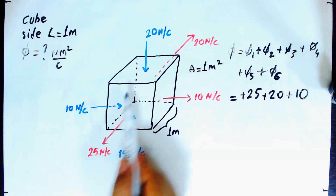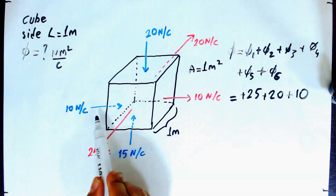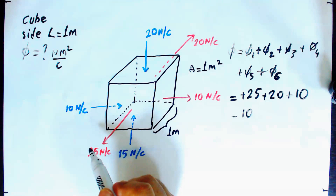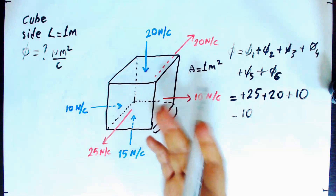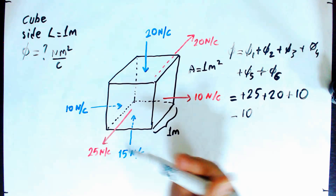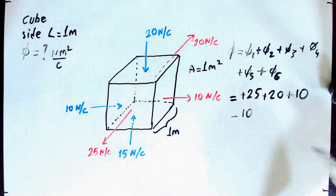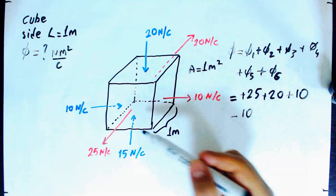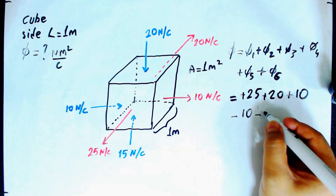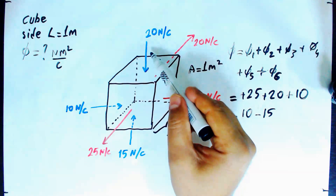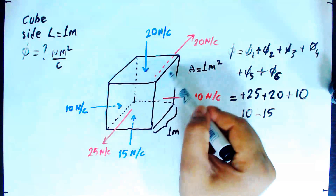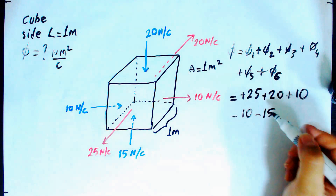For phi4, the electric field through this face is into the volume, so I must take this as minus 10. The rule is: whenever the electric field is into a closed volume, it contributes a negative flux; whenever the electric field is out of the volume, it contributes a positive flux. The fifth face is the bottom face — the electric field is into the volume, contributing minus 15. The sixth face, the top face parallel to the bottom, also has the electric field into the volume, contributing negative 20.